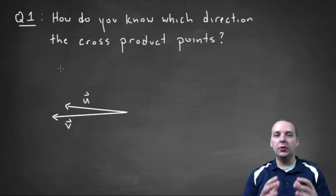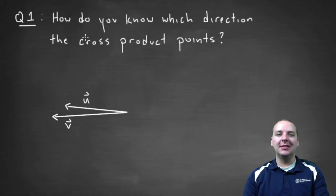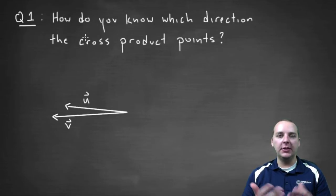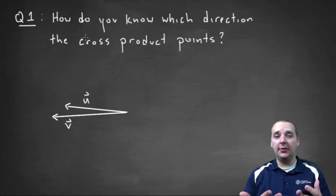So basically I want to answer two main questions about the cross product. The first question is, how do you know what direction the cross product is going to point? Because if all you're looking for is a vector that's orthogonal to u and v, there's a lot of different vectors that would be orthogonal to these two guys.